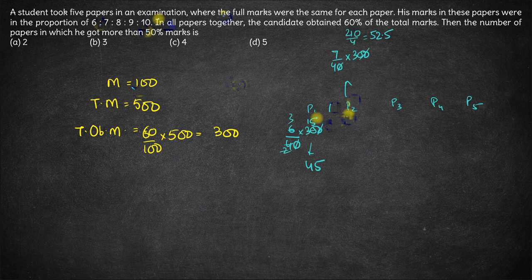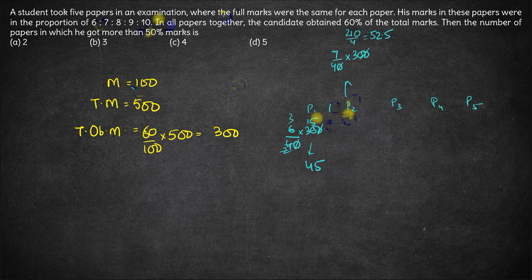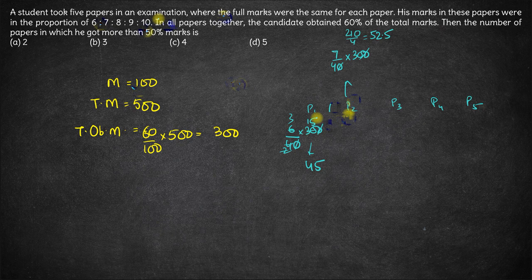So P2 is also more than 50. P3, P4, P5 will automatically be more than 50. Only P1 is less than 50. So out of these 5 subjects, in 4 subjects he gets more than 50%. Option C is the right answer here.